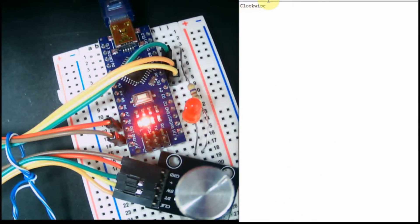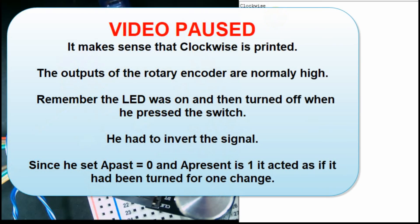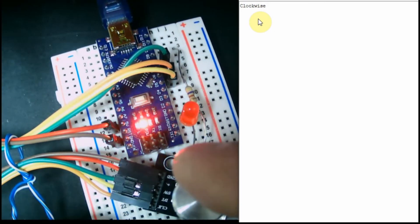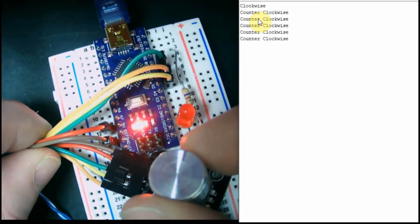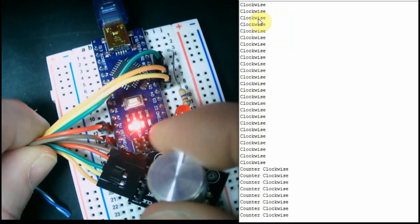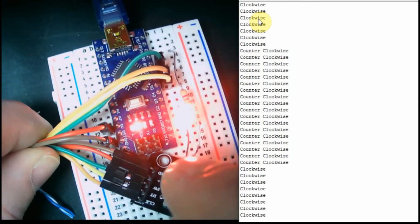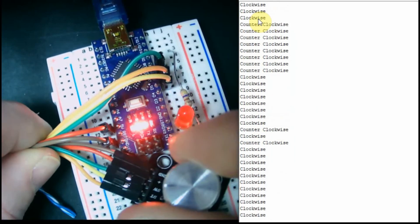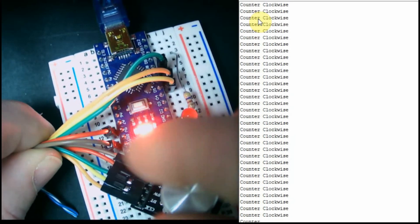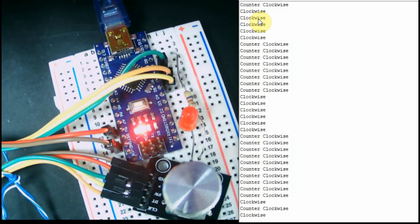Interestingly it read out clockwise without me touching anything. With the camera on the encoder and the serial monitor open, as I adjust the knob it reads out clockwise and counterclockwise — working just like we thought. If I push it the switch still comes on. But you can see when going counterclockwise every once in a while you get an error where it reads the wrong direction.